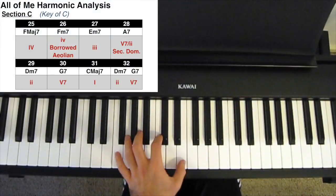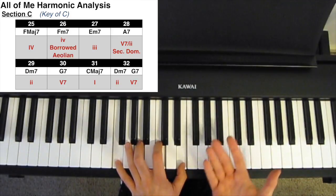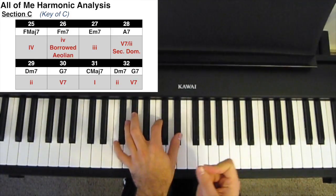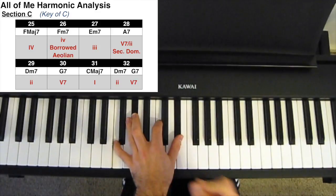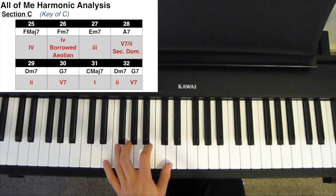We move to section C, and it begins with an F major 7 chord, which is the 4 chord in the key of C. Moving to the F minor 7, which is a minor 4 chord, borrowed from the Aeolian mode.